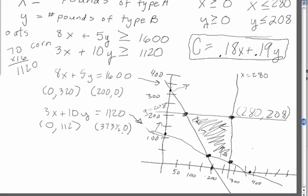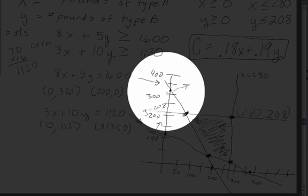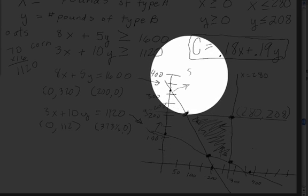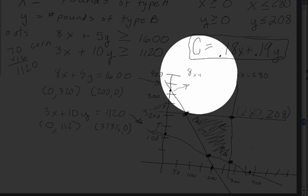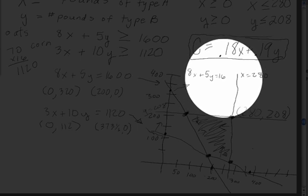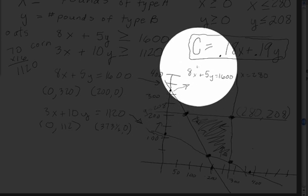Now these other points here, for example, let's take this point right here. We're going to find that by combining the equation for this line, which is 8x plus 5y equals 1,600, with the other line that it intersects, which is y equals 208.